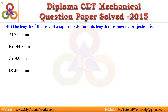Question 40. The length of the side of a square is 300 mm. Its length in isometric projection is: a. 244.8 mm. b. 144.8 mm. c. 300 mm. d. 344.8 mm. Answer is: 244.8 mm.